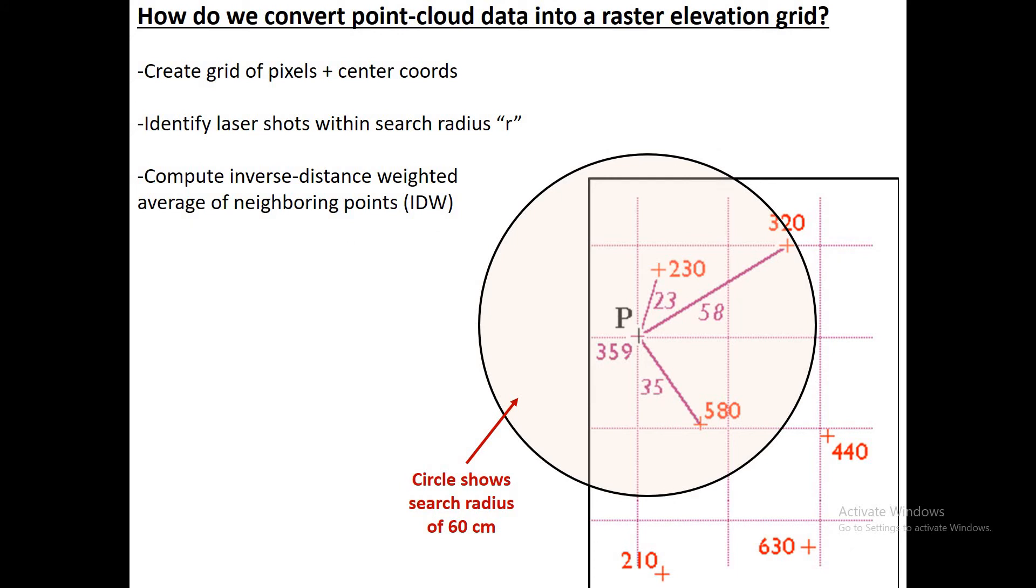Let's turn now and look at how we actually convert the irregular laser shots into a regular raster elevation grid, or a digital elevation model. Essentially what we're going to do is first create a grid of empty pixels. That's going to be our DEM. Those are shown here by these purple squares. We want to assign an elevation value, a single elevation value, into each of these raster cells or pixels. We're going to use a search radius known as little r. In this example we've defined the search radius as 60 centimeters. That's shown by this circle. Imagine we're trying to define a value for the point P. Just imagine point P is at the center of a pixel.